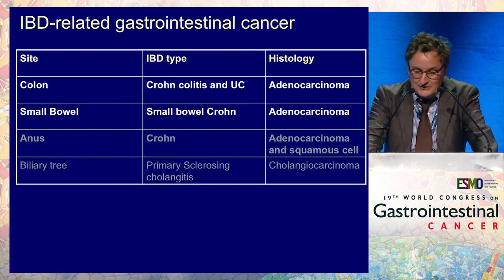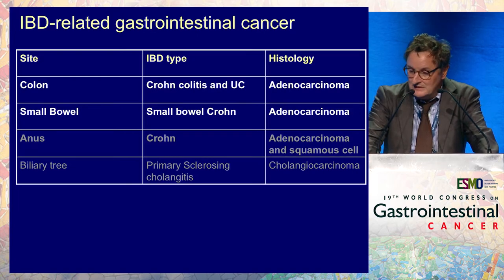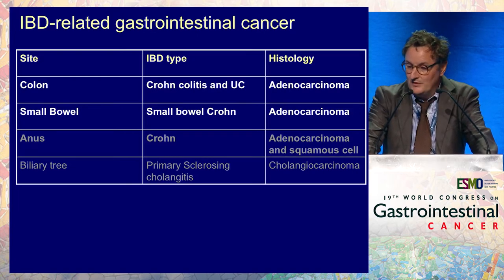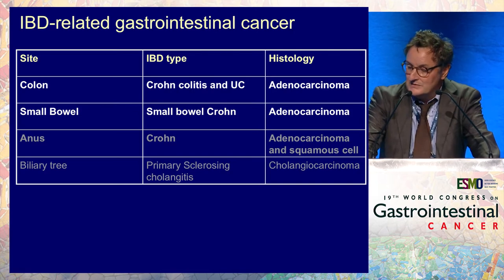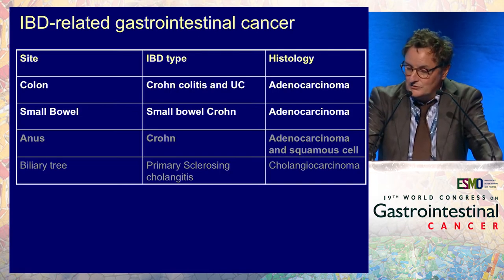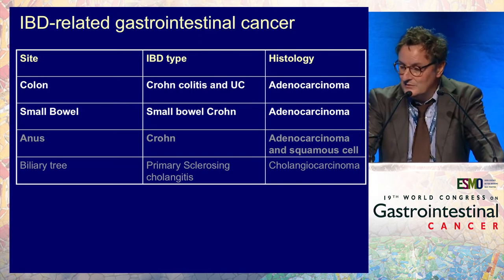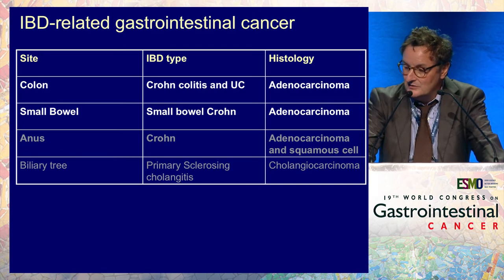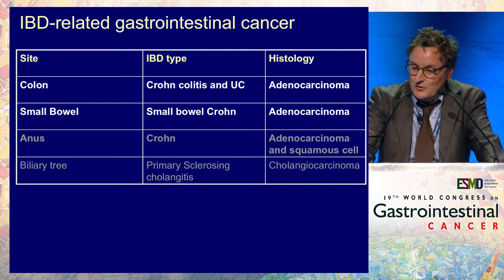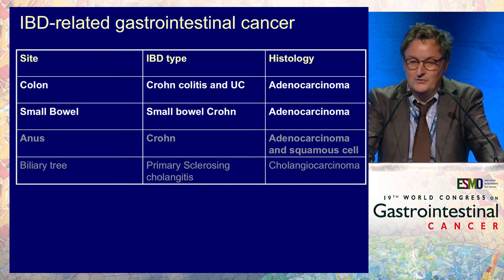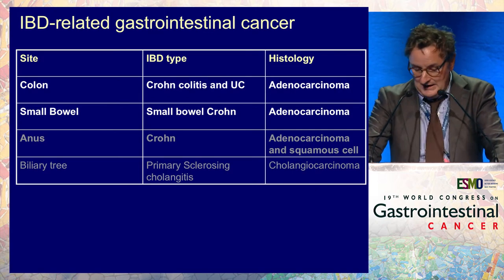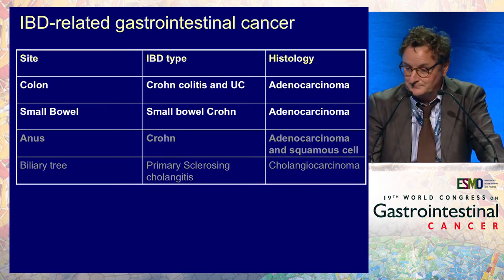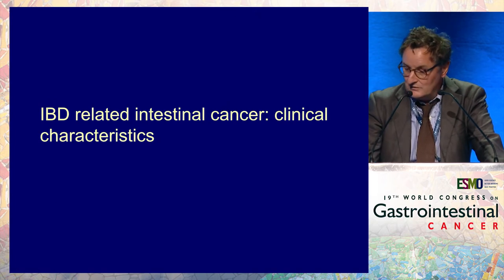They are cancers of the biliary tree, cancers of the anus, and cancers of the intestine. We will focus on colon cancer, which are associated with both Crohn's colitis and ulcerative colitis and are adenocarcinoma. We'll also say a few words about small bowel cancer, which are associated with small bowel Crohn's disease and are also adenocarcinoma.